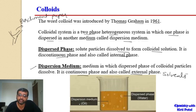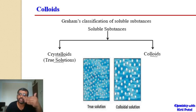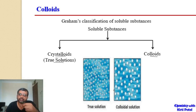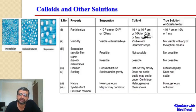Thomas Graham described soluble substances into two types: colloids and crystalloids. Crystalloids form true solutions where substances dissolve uniformly and the solution is transparent. In colloidal solutions, the solute particles are neither small enough to dissolve and give a transparent solution, nor large enough to settle down. So colloidal substances are in between true solutions and suspended solutions, and their properties lie between both.